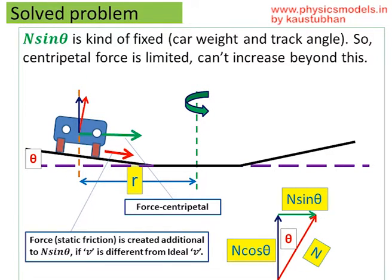Now, this N sin theta is kind of limited because N is limited by the weight of the car. Sin theta depends upon the angle of the road which is fixed. Therefore, N sin theta cannot keep on increasing. There is a limit to it.